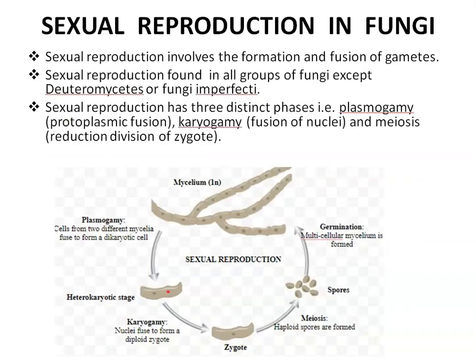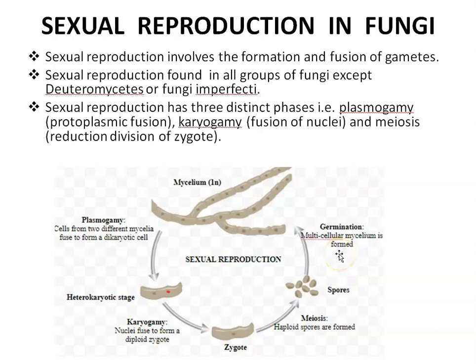Sexual reproduction in fungi involves the formation and fusion of gametes. Sexual reproduction is found in all groups of fungi except Deuteromycetes, commonly known as mold, also called Fungi Imperfecti — because here no sexual reproduction takes place, only asexual reproduction. Sexual reproduction has three distinct phases: plasmogamy (fusion of protoplasm), karyogamy (fusion of nuclei), and meiosis (reduction division of the zygote). First plasmogamy, then karyogamy, then reduction division of the zygote forms spores called meiospores, and each spore germinates to form a new mycelium.